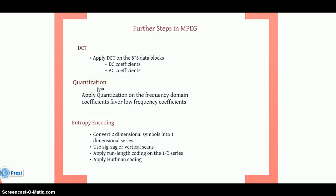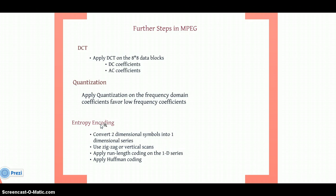The second step is quantization. Quantization is applied on the frequency domain — we favor the low frequency domain. Then entropy encoding. Entropy encoding is like Huffman coding, which is used for text encoding. Here, after converting the image into the cosine transformation, we apply coding like Huffman coding or run-length encoding. We also apply zigzag scanning in the image.